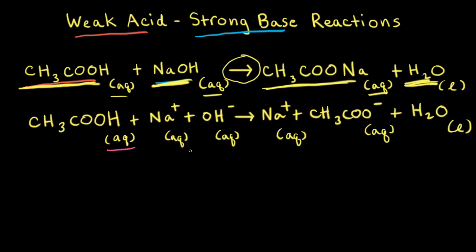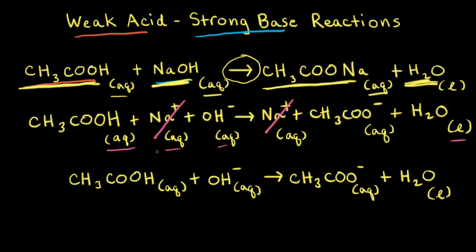I've added in the aqueous subscripts, a liquid subscript for water, plus signs, and the reaction arrow, so this balanced equation represents the complete ionic equation. Next, we're going to use the complete ionic equation to write the net ionic equation for this weak acid–strong base reaction. To do that, we first need to identify spectator ions — spectator ions don't participate in the reaction. Looking at the complete ionic equation, there are sodium cations on the left and sodium cations on the right, so we can cross out the sodium cation; that's our spectator ion. After we take out the sodium cation, what's left over is our net ionic equation: acetic acid plus hydroxide anion forms the acetate anion and water.